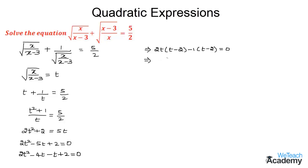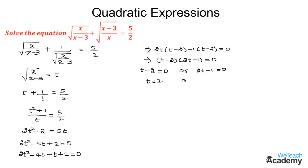So we get (2t minus 1)(t minus 2) = 0, giving us 2t minus 2 is equal to 0, or 2t minus 1 is equal to 0. Transferring the constants to the other side, we get t equals 2, and t equals 1 by 2.